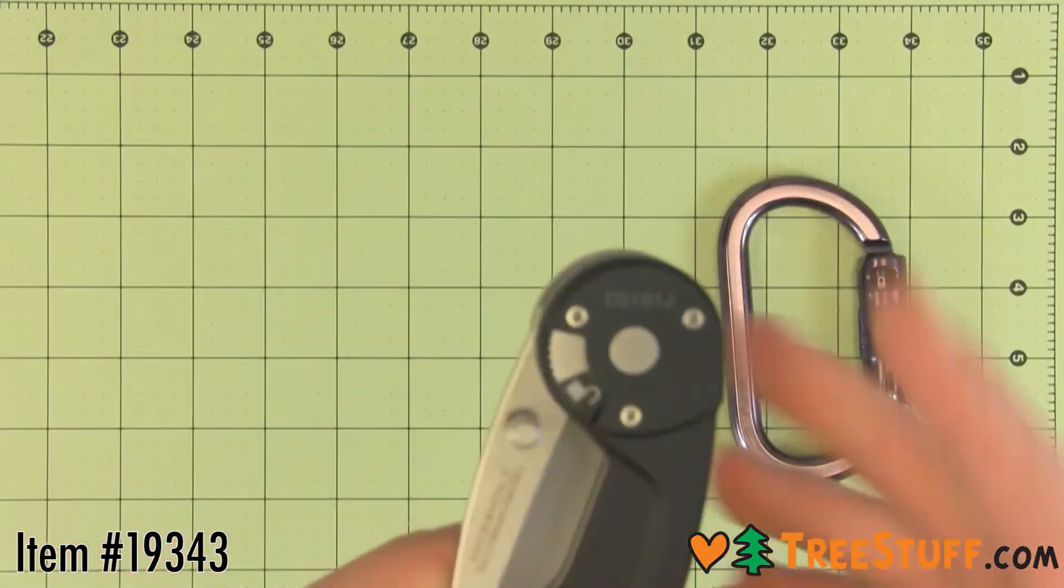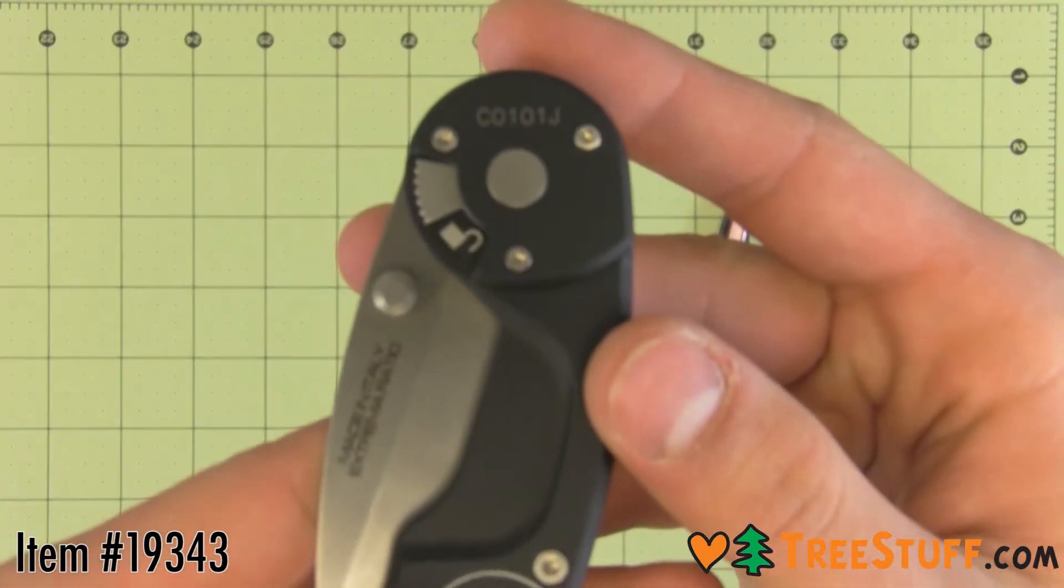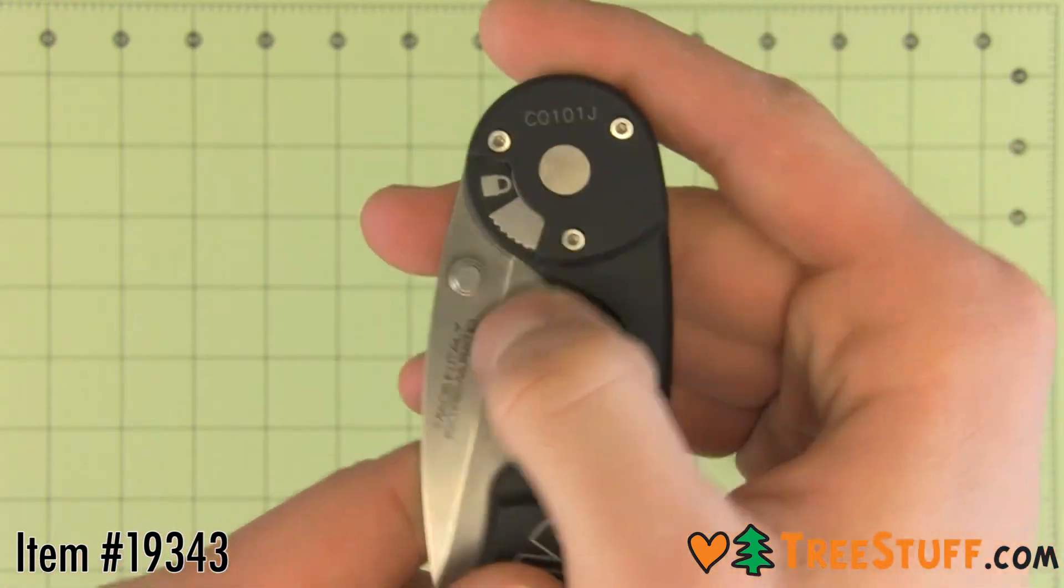Its high quality blade easily cuts ropes, cords, and tapes. It also features a locking button to prevent accidental opening of the blade.